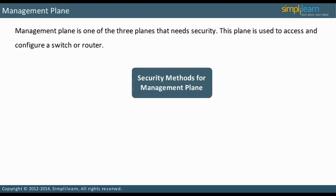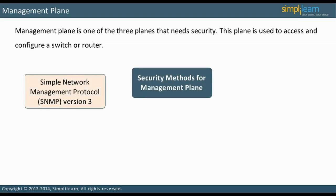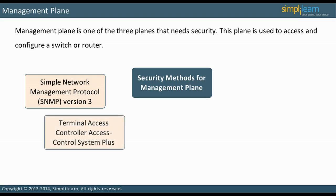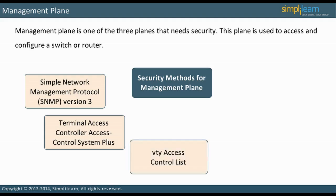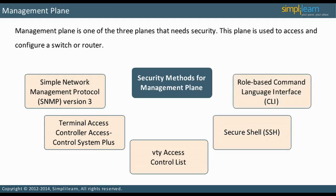The management plane is secured through various methods. One method is Simple Network Management Protocol SNMP version 3, which can be compared to SNMP versions 1 and 2C, which have no authentication or encryption. Another security method is implementing Terminal Access Controller Access Control System Plus, TACACS+, for authentication and authorization. In addition, a VTY access control list can be used to secure the VTY lines. Secure Shell provides encryption for remote access, and role-based CLI views restrict the use of router commands by user.